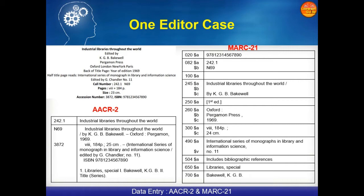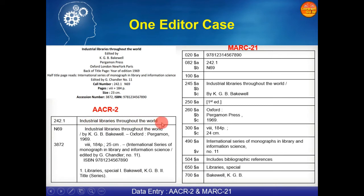In case of one editor, the main entry will be prepared under the title and the editor's added entry will be prepared under the editor name. The example given here shows that as per AACR2, the card catalogue will be prepared with the main entry under the title and the added entry prepared under the first author, meaning the editor.